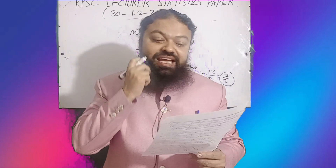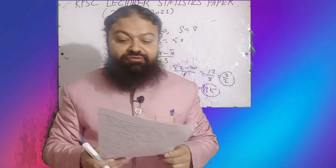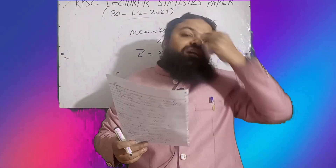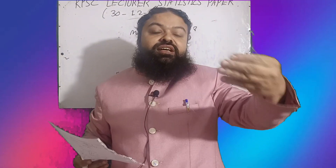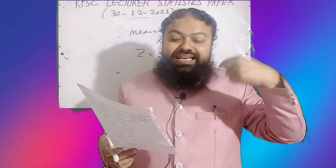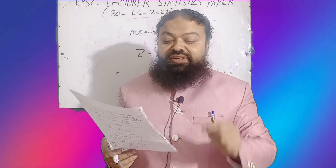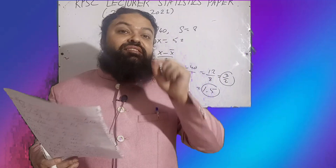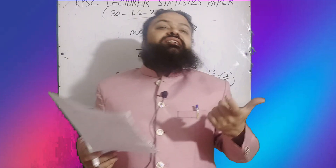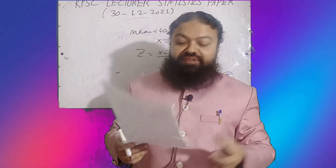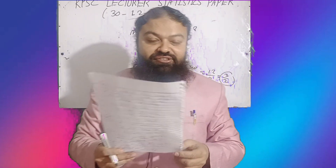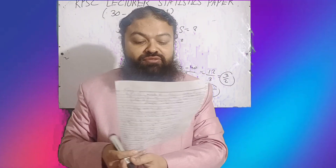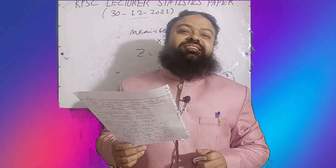The next question: whenever predictions are made from the estimated regression line, the relationship between x and y is assumed to be linear. We assume there is a linear relationship between x and y.